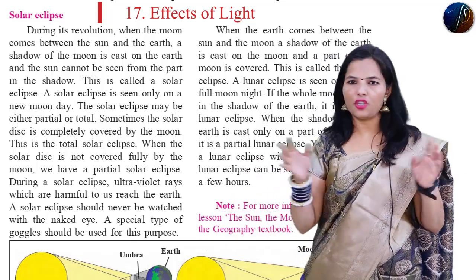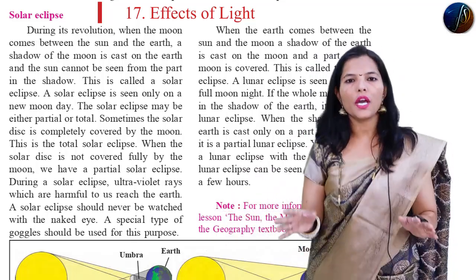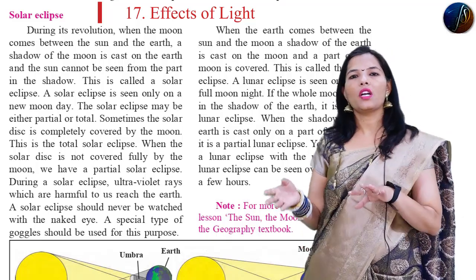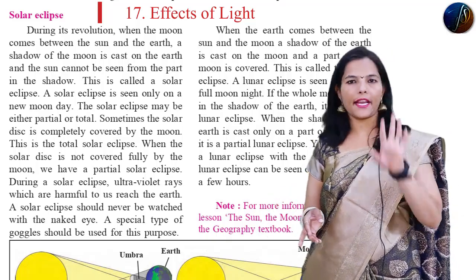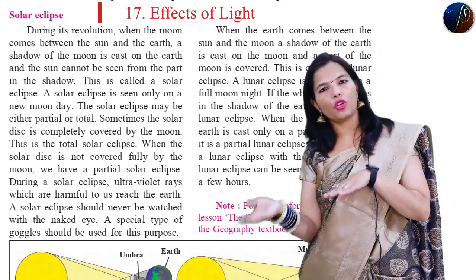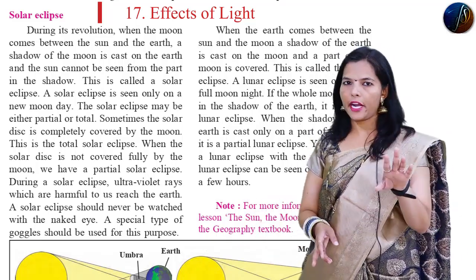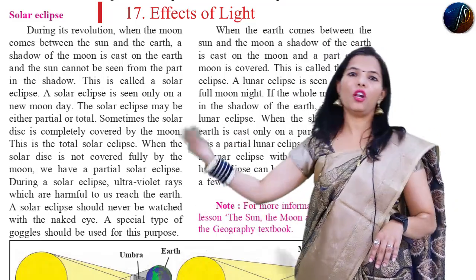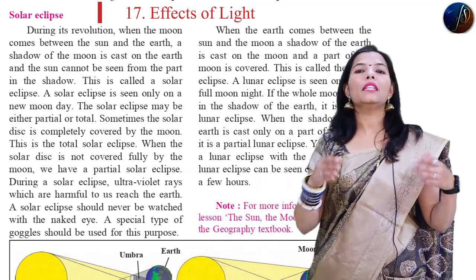This type of condition is called as the Lunar Eclipse. In the first point for Solar Eclipse, the shadow of the Moon falls on the Earth. Here, the shadow of the Earth falls on the Moon.